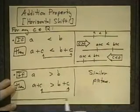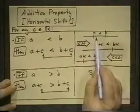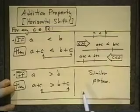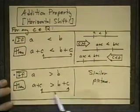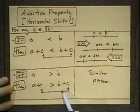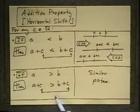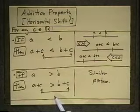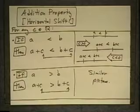Again, the same c has been added to both sides and this is a similar picture. I won't go through it. The only difference is that you start out with a greater than b instead of b greater than a, and you will have a shift left or right depending on whether c is positive or negative. So that's the addition property. If you add the same number to both sides of an inequality, the direction of the inequality does not change, and that's what you want to remember from this.